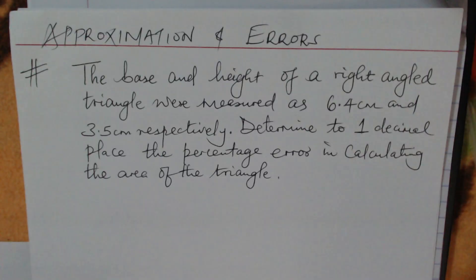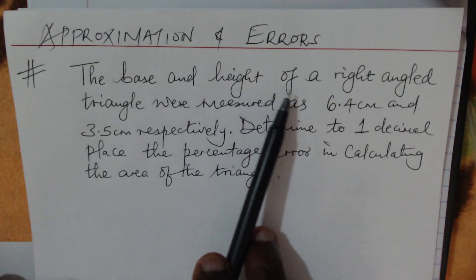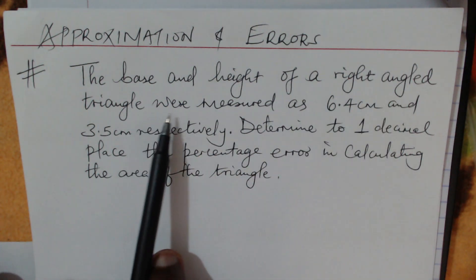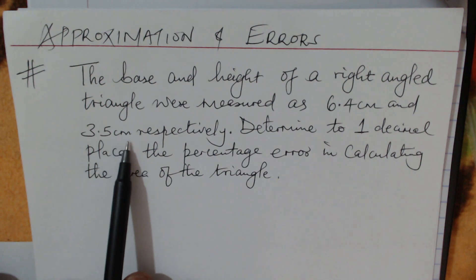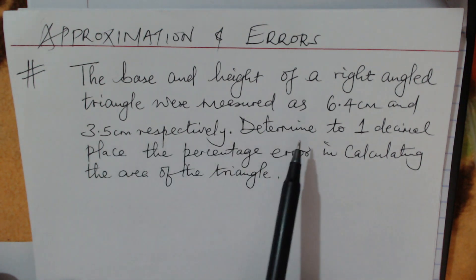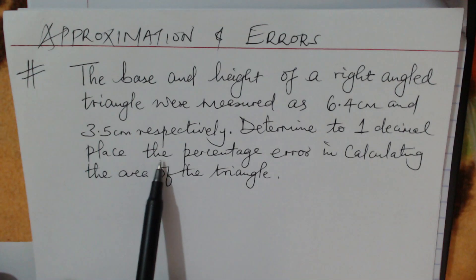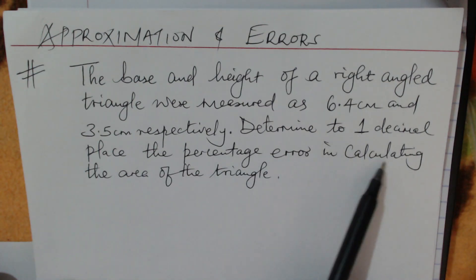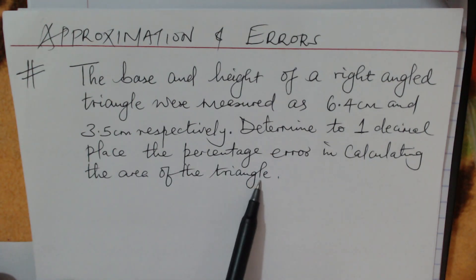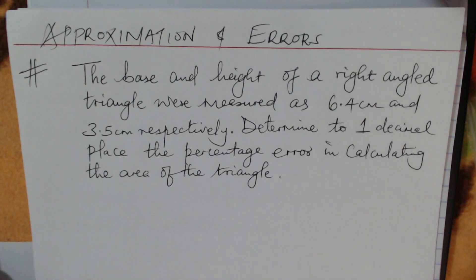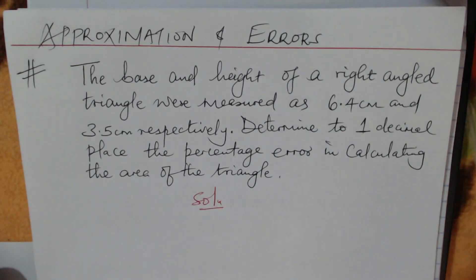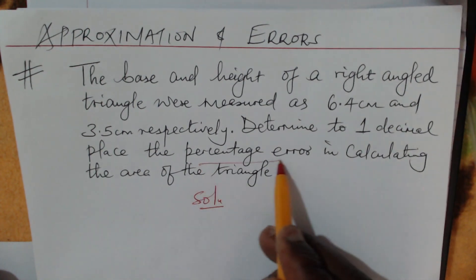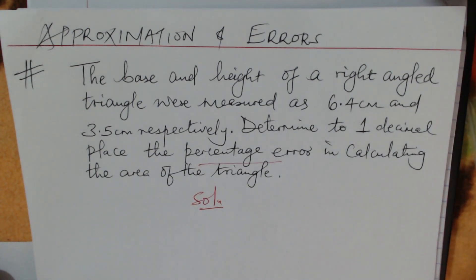Approximation and errors. The base and the height of a right-angled triangle were measured as 6.4 centimeters and 3.5 centimeters respectively. Determine, to one decimal place, the percentage error in calculating the area of the triangle. Let's go to the solution. The question is: find the percentage error in calculating the area of the triangle.